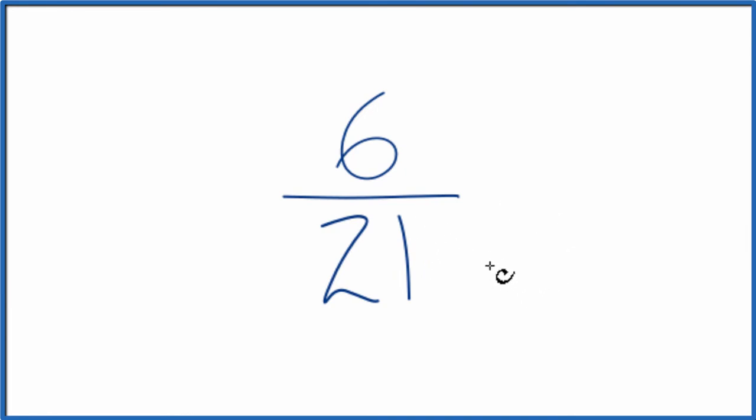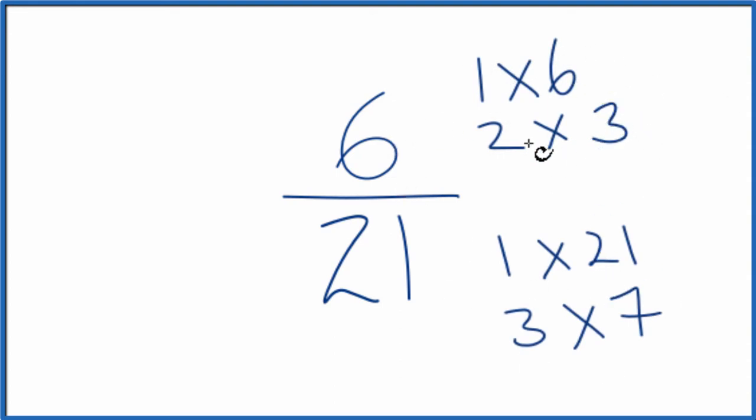To do that, we need to find a common factor for 6 and 21. Let's list the factors for 6 and then for 21. So when I look at the factors here for 6 and for 21, the greatest common multiple is going to be 3. That's the largest number that goes into 6 and 21.